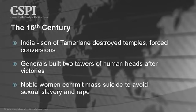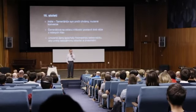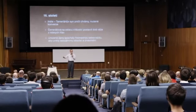Hindu noblewomen committed mass suicide to avoid sexual slavery and rape. A custom evolved in which after a lost battle, elite women — the leaders' wives — would commit mass suicide by throwing themselves into fire. This is the practice of sati. Have you heard of the Hindu Kush in Afghanistan? Hindu Kush means 'death place of the Hindus.'